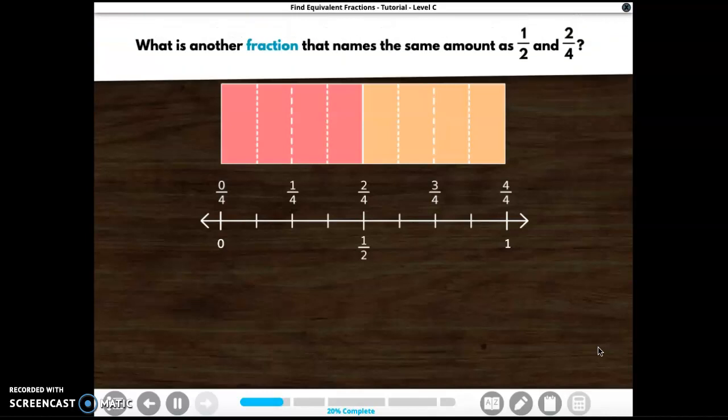What is another fraction that names the same amount as one half and two fourths? How many equal parts now? Two, three, four, five, six, seven, eight. And half of the eight is one, two, three, four.